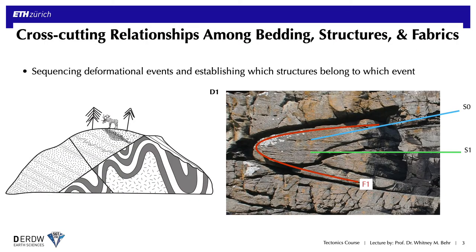Structural geologists also place a lot of emphasis on identifying different deformational events and assigning specific structures to each event. We work often with crosscutting relationships, like in the cartoon on the left, trying to establish when folding occurred relative to magmatic intrusion, relative to sedimentary depositional events and development of unconformities, relative to faulting, etc. We tend to use numbering or lettering systems to distinguish these different generations.